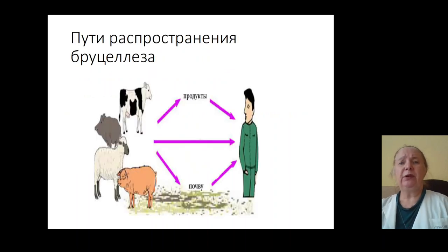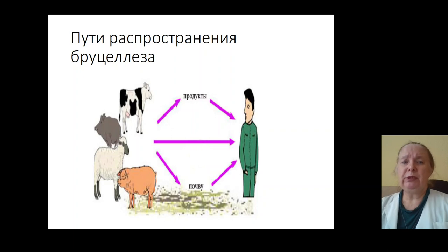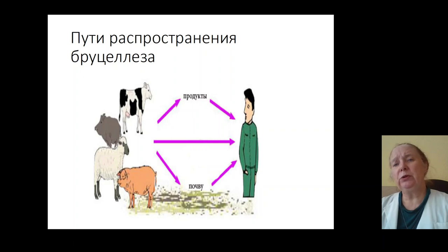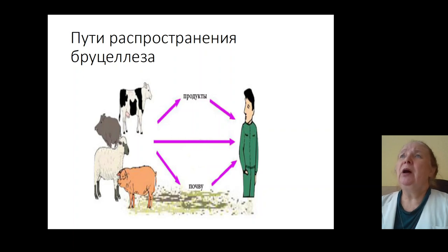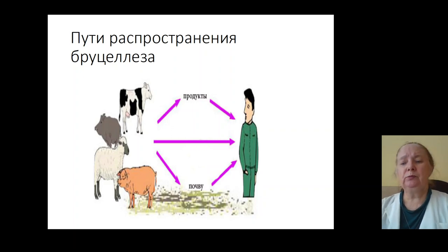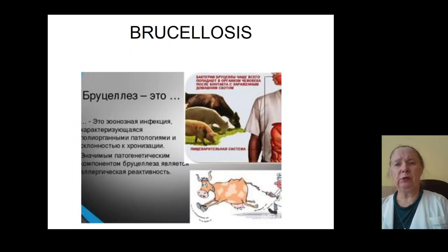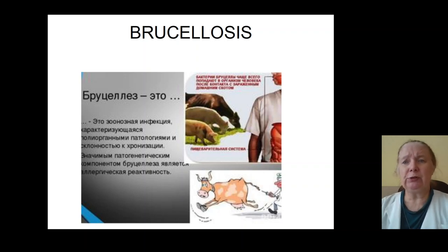Sources of infection are agricultural animals — cows, pigs, lambs, goats — and infection spreads from infected products such as meat and milk. Contact and alimentary mechanisms are very important. Professional analysis is important because farmers are more often infected.